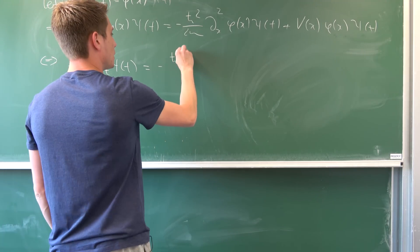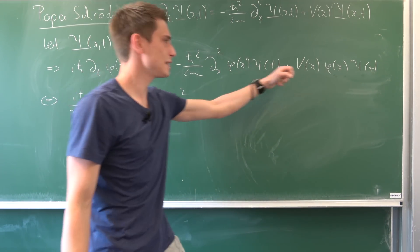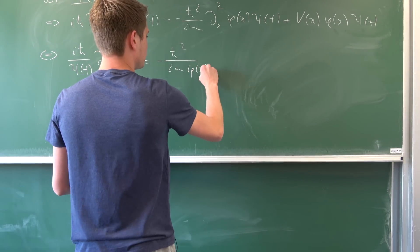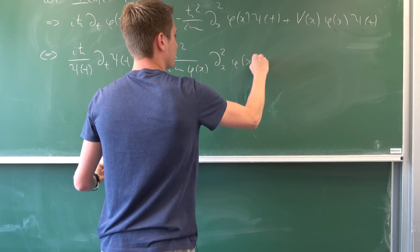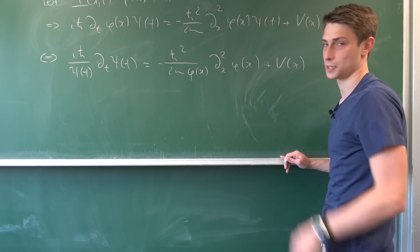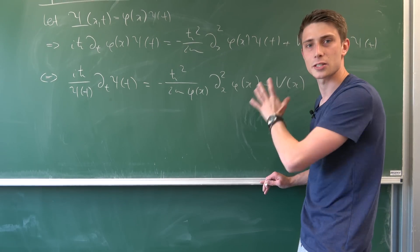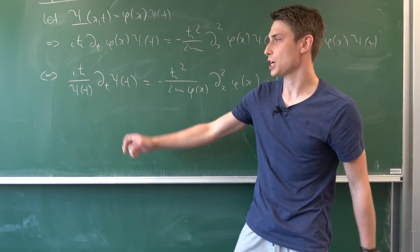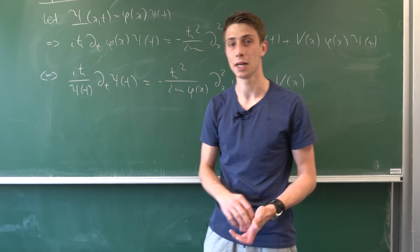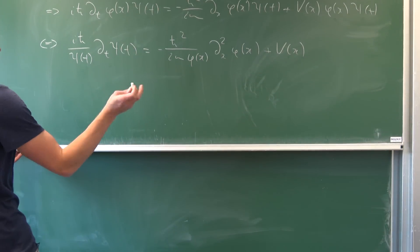The right hand side becomes minus h-bar over 2m times (1/phi of x) times del-squared phi of x over dx-squared, plus V of x. It's important that our potential is not time dependent. Notice that the left hand side is totally time dependent and the right hand side is totally dependent on x. If we change time, nothing changes on the right; if we change x, nothing changes on the left. That means both sides must be equal to a constant.